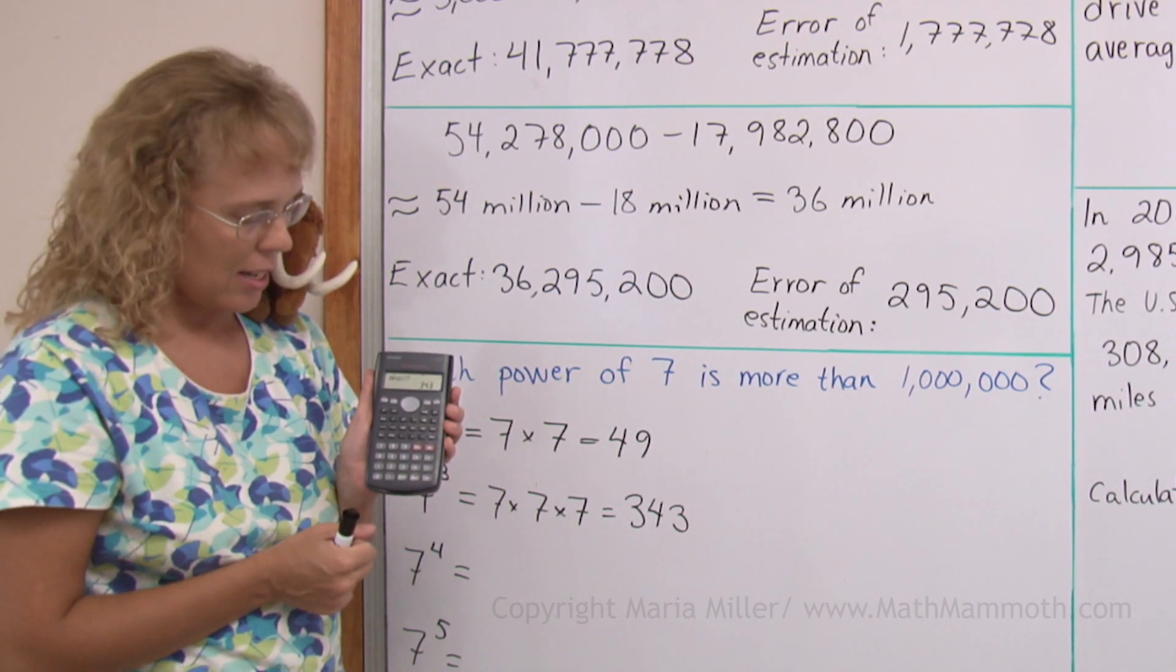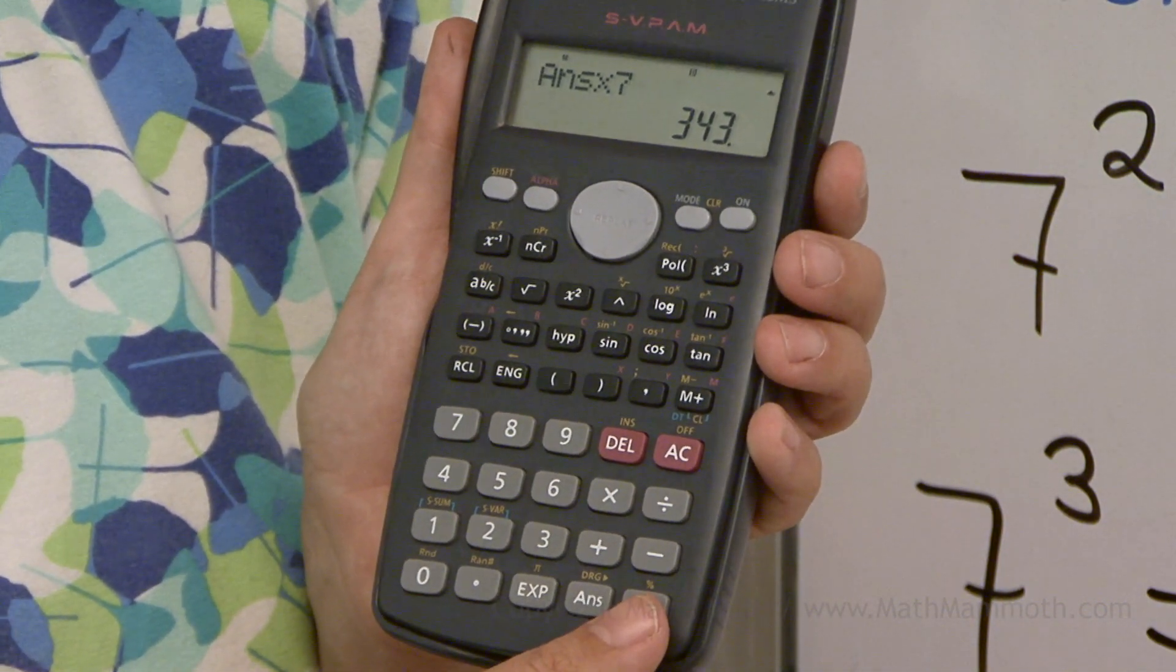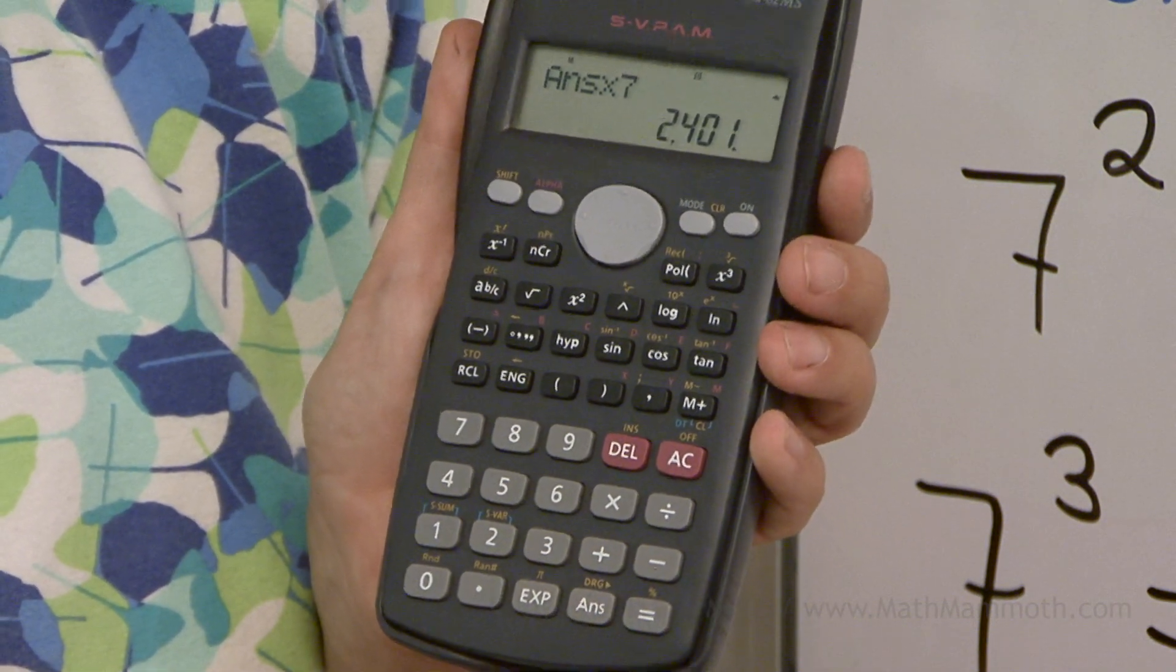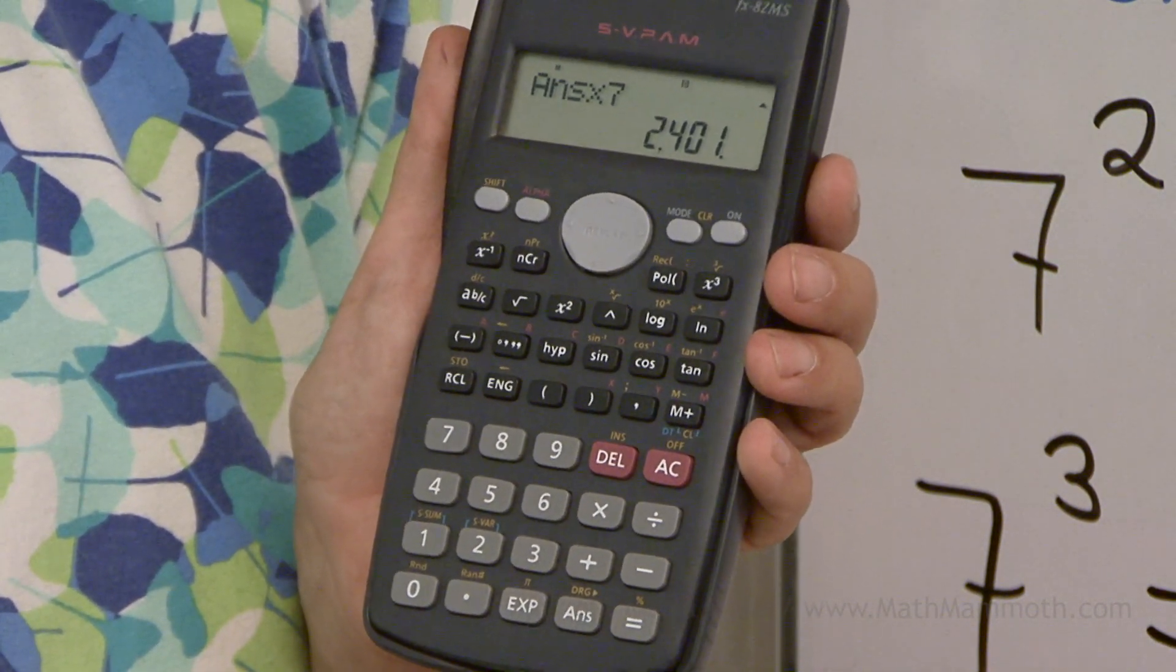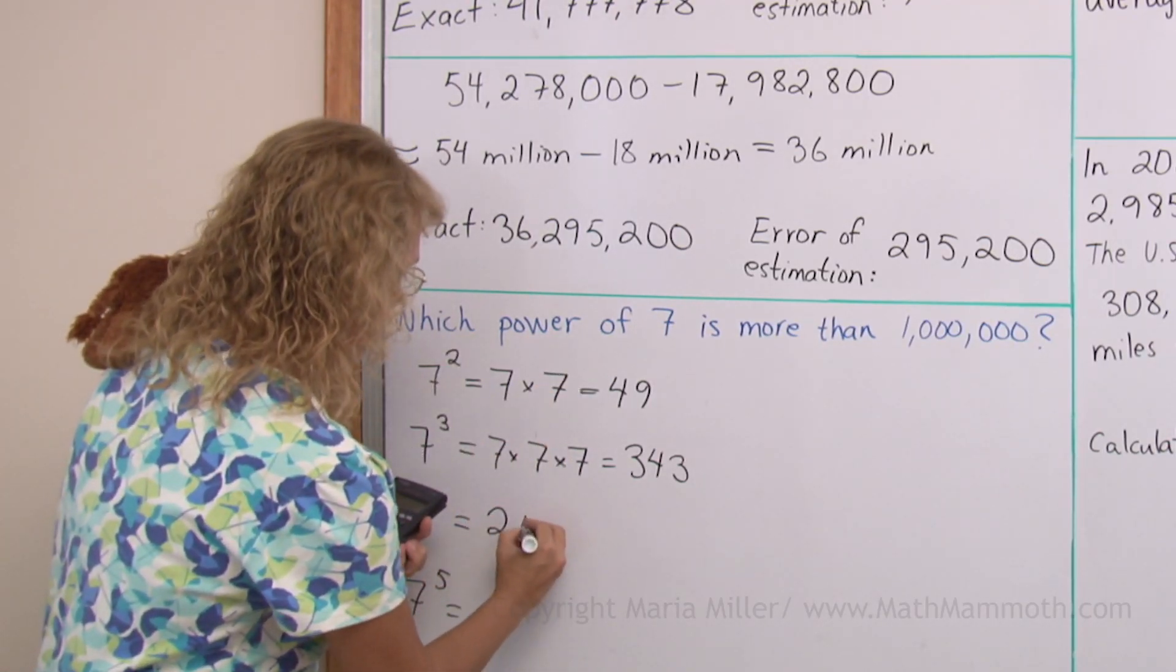The next one, again, at this point I can just push equals, and it'll remember this times seven that I'm going to do. And this is the previous answer times seven. So here we get 2,401.